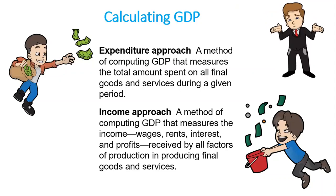The question is: how can two different approaches lead to the same result? Based on the accounting reality that all expenditures in an economy should equal the total income generated by the production of all economic goods and services. To make it simpler: if you go to buy a chocolate bar from a nearby store and spend one dollar, that is your expenditure. Your expenditure of one dollar is the income of the owner of the shop. So income equals expenditure, and this is why applying it to the economy as a whole leads to the same result using both approaches.